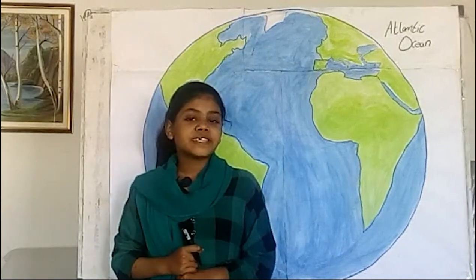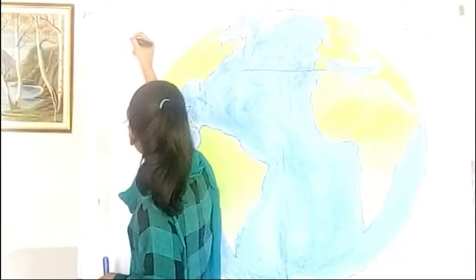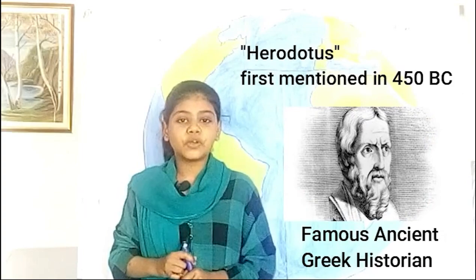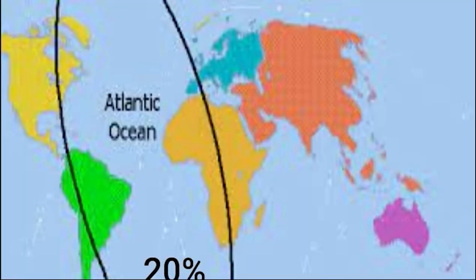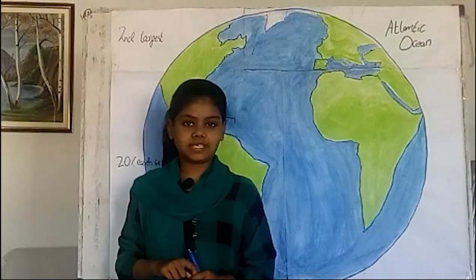The Atlantic Ocean is the second largest of the Earth's 5 oceans. The Atlantic Ocean name was derived from Greek mythology. It means Pyrrhodog first mentioned this name in 450 BC. The Atlantic Ocean covers approximately 20% of the Earth's surface and 29% of it is water surface area.